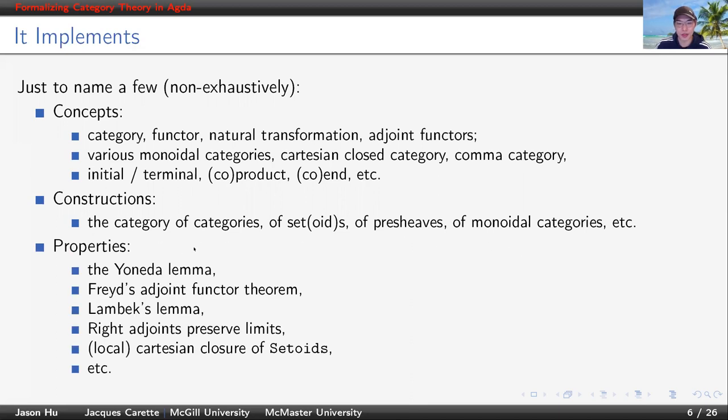We also proved many properties. The classical ones include the Yoneda lemma, adjoint functor theorem, Lambek's lemma, right adjoint preserve limit, local Cartesian closure and Cartesian closure of setoids, etc. And this list is not exhaustive.